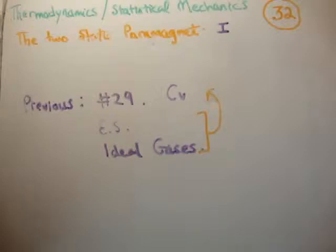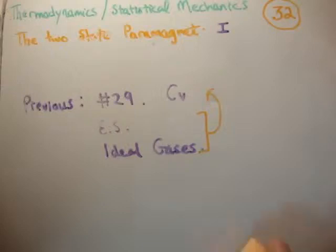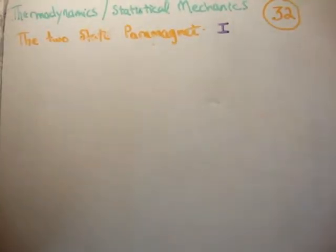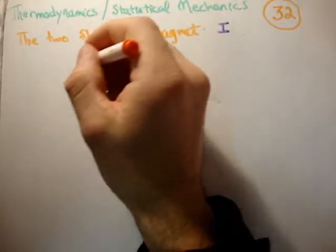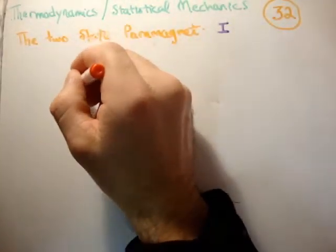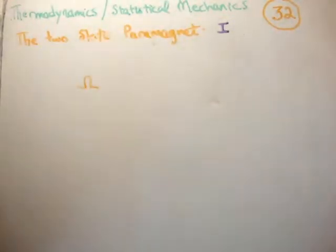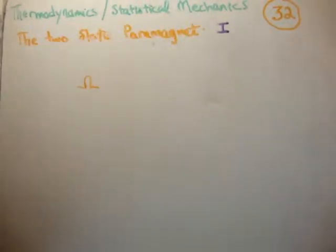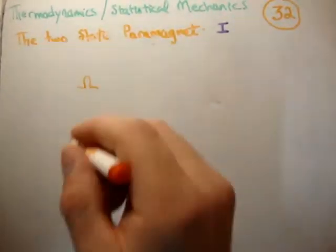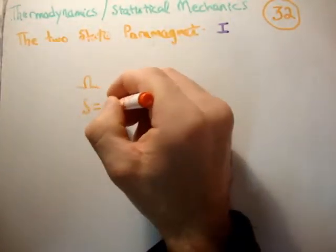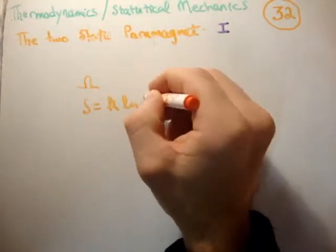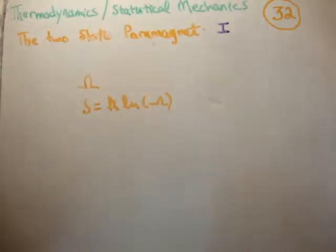It has some very interesting and counterintuitive behavior, and it's a good idea to look at this and try to understand this different behavior in terms of thermodynamics. As we saw in video number 29, in order to calculate the heat capacity at constant volume we need first to get some functional form for the multiplicity. Then we're able to get the entropy, which we know is equal to Boltzmann's constant times the natural logarithm of the multiplicity.